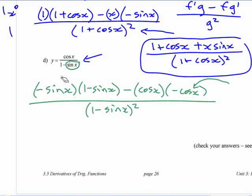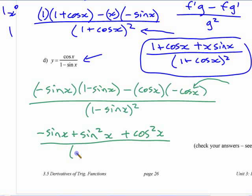We have sine x here times that 1 minus... Sorry, negative sine x times 1 minus sine x. This is going to give you what here? Negative sine x plus sine squared x, sine x squared. Here we have plus cos squared x over 1 minus sine x squared.